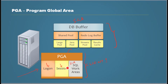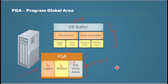The server process holds information specific to the client it is serving. If there are a thousand clients, there will be a thousand server processes, each catering to its own client, and they all would be interacting with SGA. Thank you for watching.